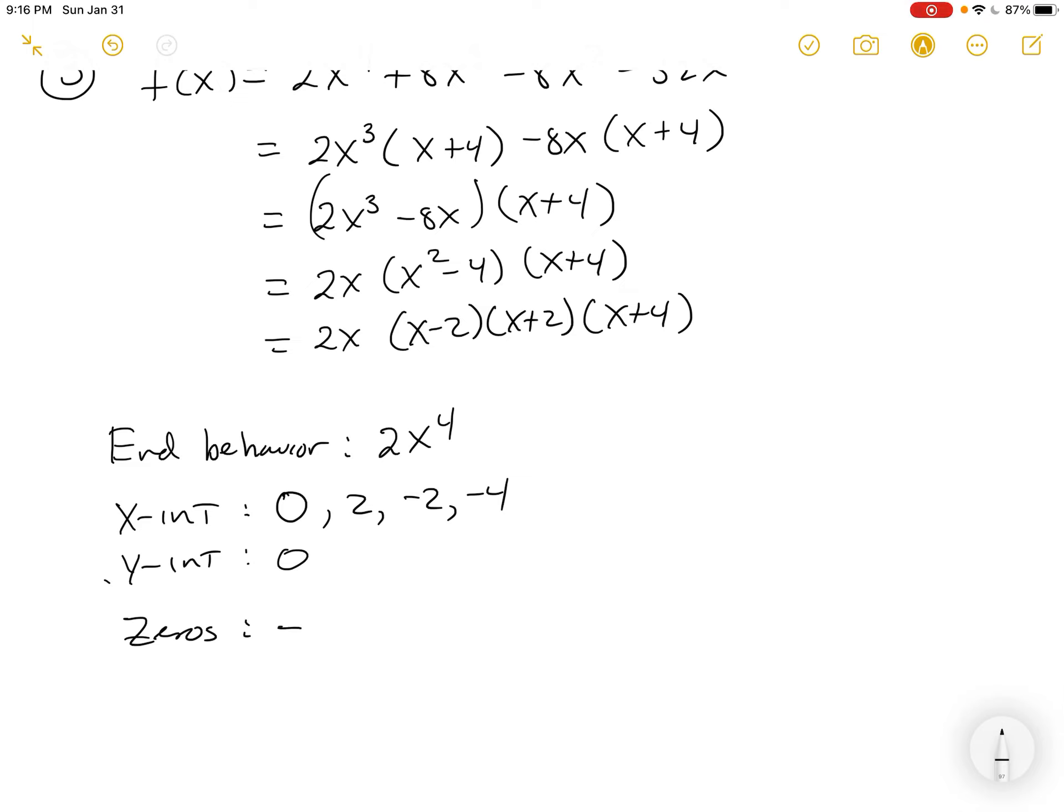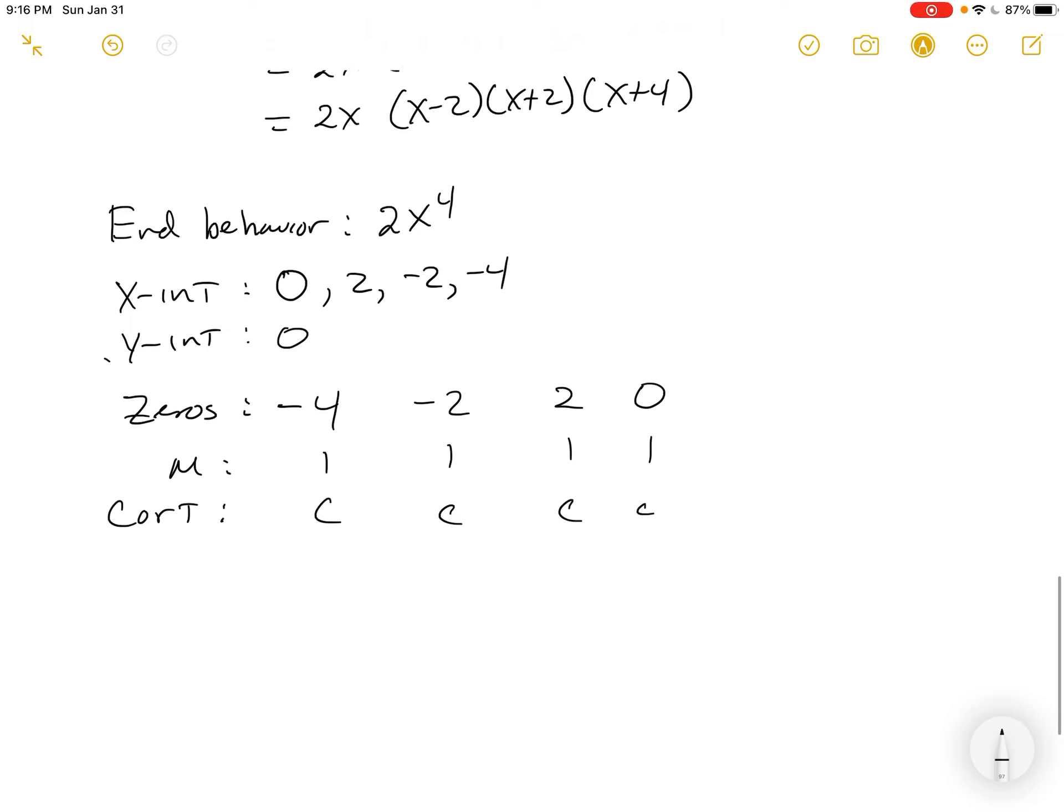This time, I'll put them in this ascending power. Negative 4, negative 2, 0, and 2. All have multiplicity of 1 and all cross, right? And all of that because of the odd multiplicity. What's left? Graph it.